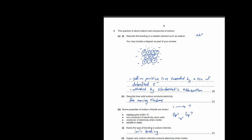Explain why sodium chloride conducts electricity when molten. It is because when molten, the ions are freely moving. This is similar to how free-moving electrons allow conduction in metals, but in this case it's freely moving ions.